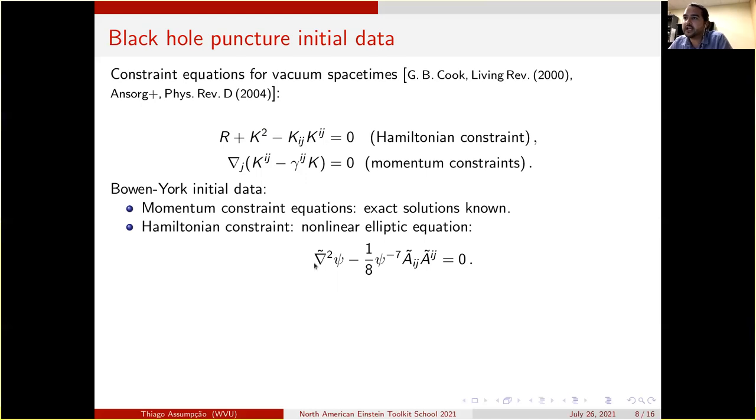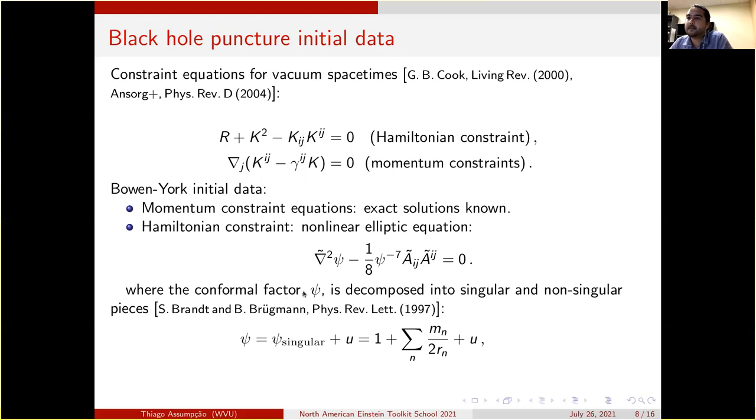So we only have to solve the Hamiltonian constraint, which comes as a nonlinear elliptic equation that takes this form here. Psi is a conformal factor and is decomposed into singular and non-singular pieces. As you can see here, the non-singular piece is u and here's the singular term.